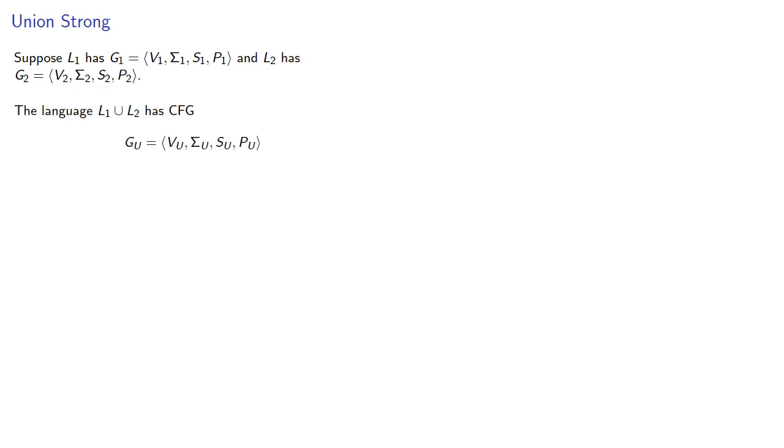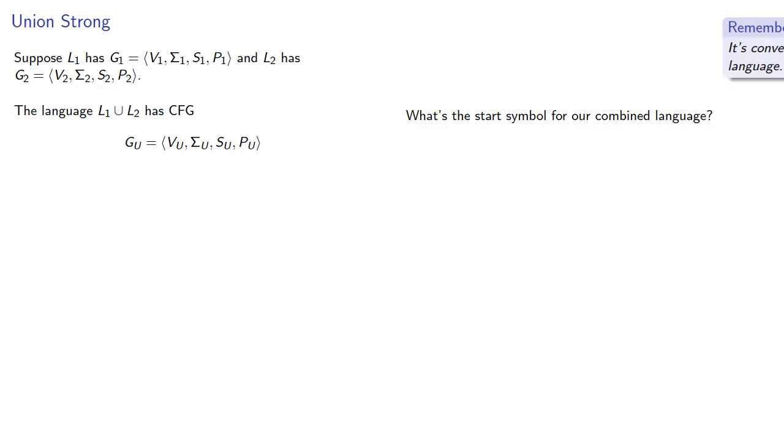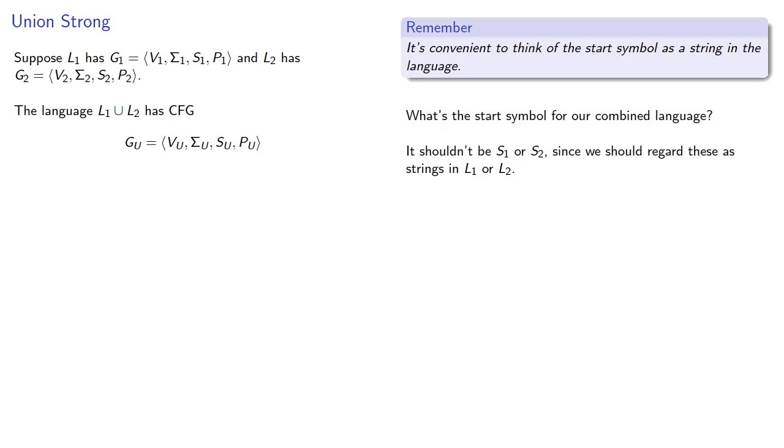We could write down the four-tuple and decide what each component is. What's the start symbol for our combined language? It's convenient to think of the start symbol as a string in the language. Our start symbol for the combined language shouldn't be S1 or S2, since we should regard these as strings in L1 or L2. So we'll introduce a new symbol, SU.